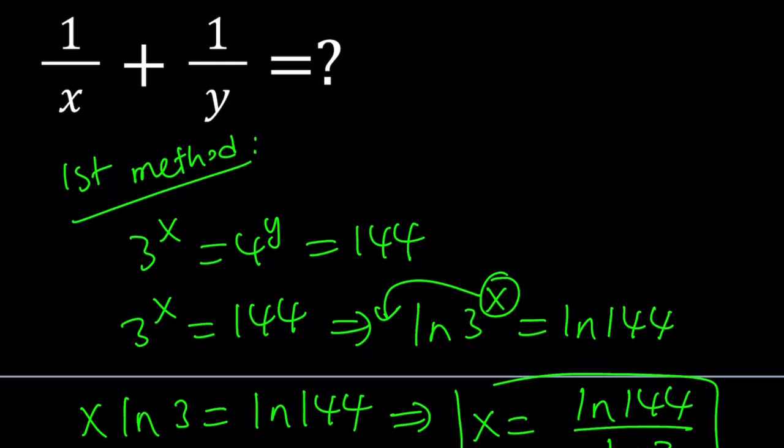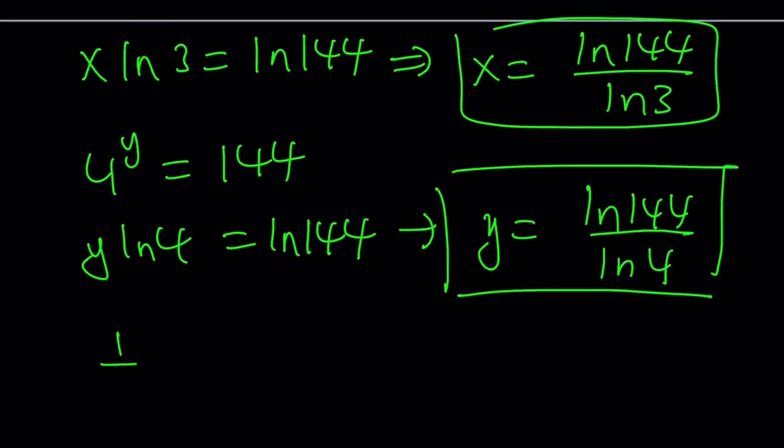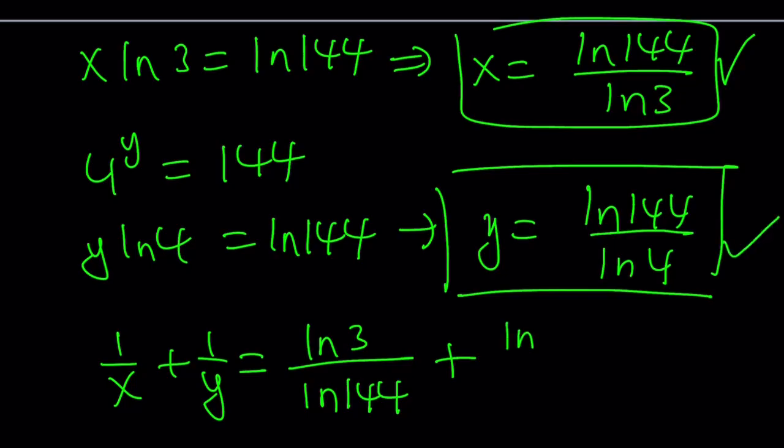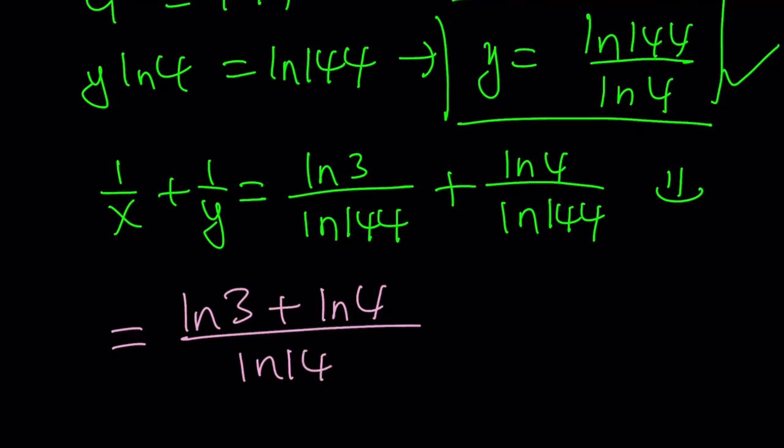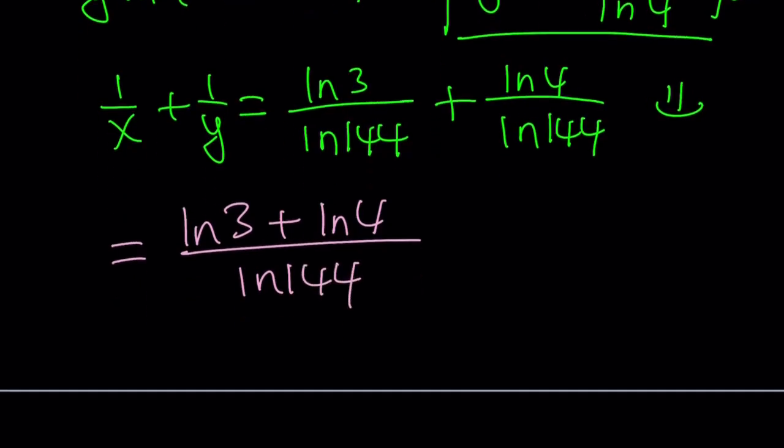Let's take a look at what we are looking for. 1 over x plus 1 over y. So 1 over x from here is just going to be the reciprocal, which is ln 3 over ln 144, and 1 over y is just going to be ln 4 over ln 144. Beautiful. Because we do have a common denominator automatically, we can just add the numerator. So what we're looking for is 1 over x plus 1 over y. I can write this as ln 3 plus ln 4 over ln 144.